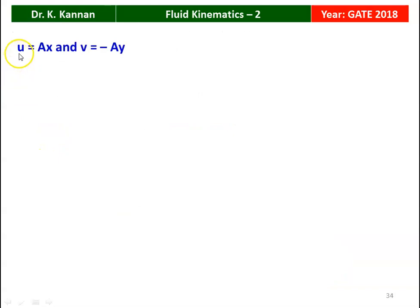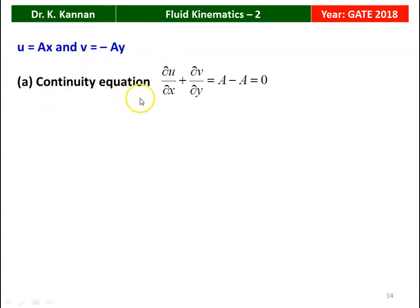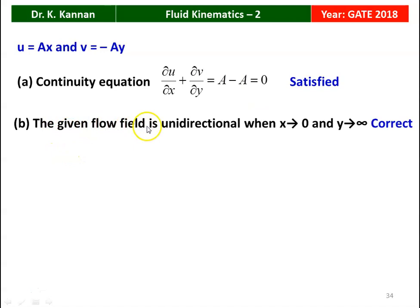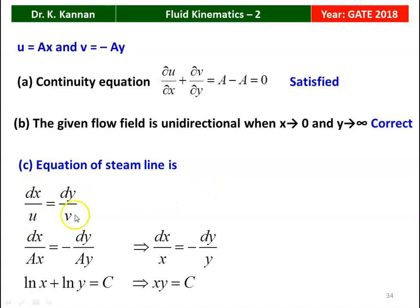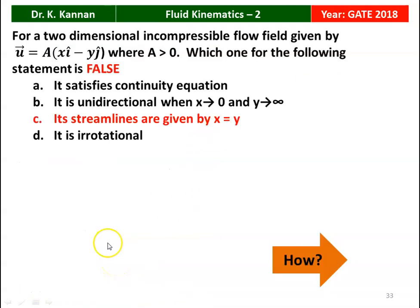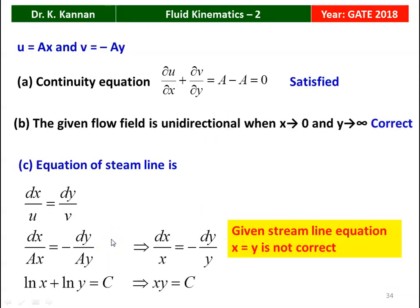From the velocity vector, u = ax and v = −ay. Continuity: ∂u/∂x + ∂v/∂y = a − a = 0, so the continuity equation is satisfied (statement A is true). The flow is unidirectional when x→0 and y→∞ (statement B is true). For streamlines, dx/u = dy/v gives dx/(ax) = dy/(−ay), integrating: log x + log y = constant, so xy = constant — not x = y, making statement C false.